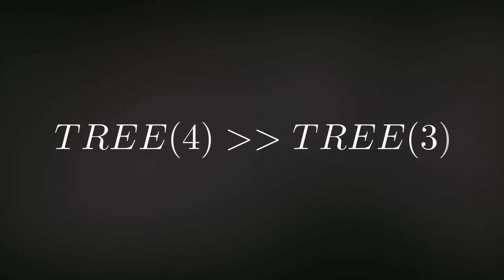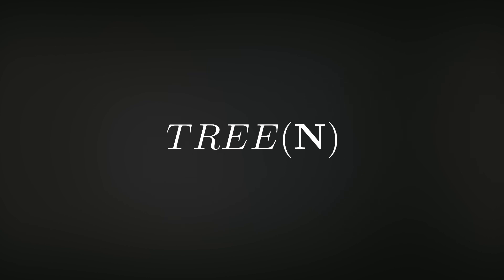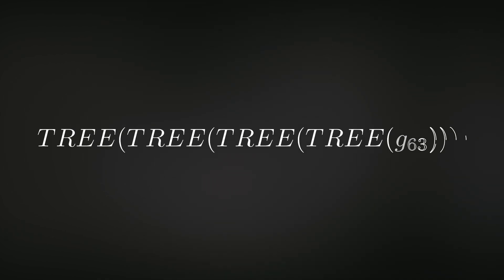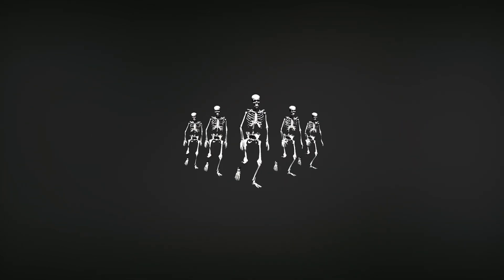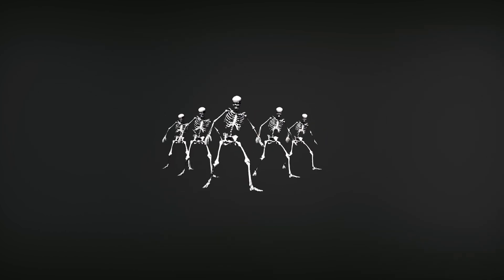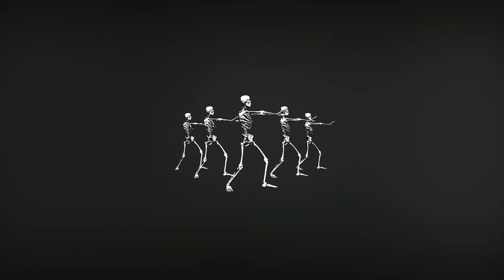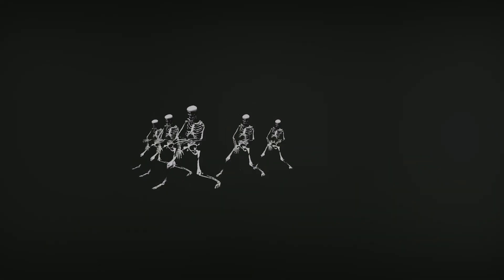But we don't have to stop at tree of 3. Tree of 4 is provably finite and much, much greater than tree of 3. In fact, we can put any positive integer into the tree function and it's still finite. That means we could put tree of Graham's number, or tree of tree of 3, or tree of tree of tree of tree of Graham's number. These numbers are so huge that we really start to lose the meaning of them. And to be honest, do they have any real-world applications? Not really. But they are pretty cool.